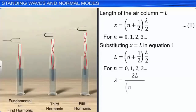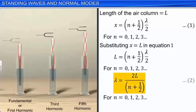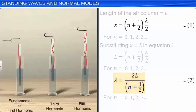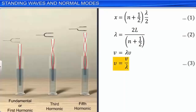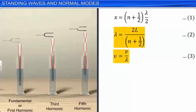Equation 2 gives the modes which are sustained in the air column. We know that V = λν, and by rearranging, ν = V/λ. Let this be equation 3. Substituting equation 2 into equation 3, we get frequency ν = V/[2L/(n + 1/2)]. On rearranging, we get ν = (n + 1/2)(V/2L), for n = 0, 1, 2, 3, and so on. Let this be equation 4.